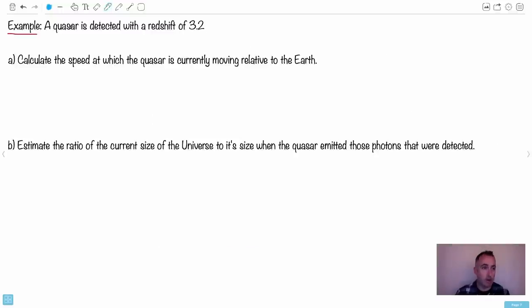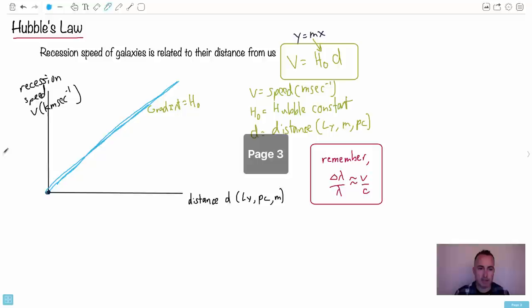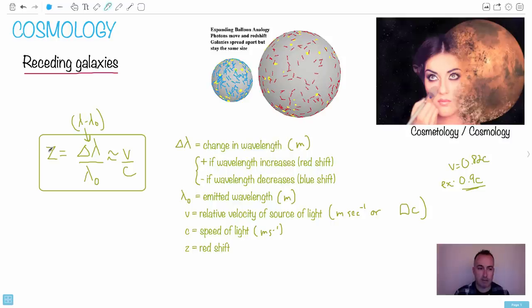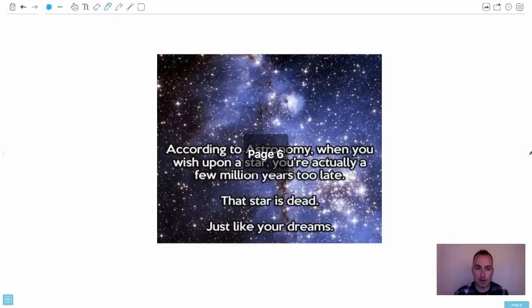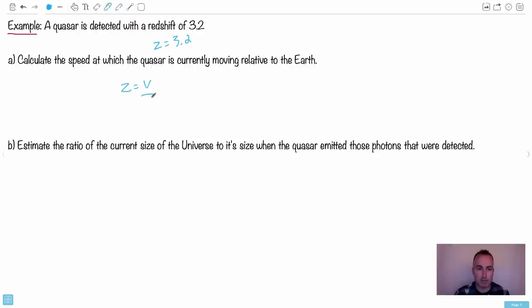So here's an example. We have a quasar. By the way, a quasar is a really distant light source. It's some of the brightest things we know of in the universe. So a quasar is detected with a redshift of 3.2. What is redshift again? Do you remember what letter that is? That's Z. So you know that Z is 3.2. The question is calculate the speed at which it's currently moving relative to the Earth. So find its speed. So we need an equation for Z. Do you remember some? Let's see here. If we go back, we have something for Z. We have this one right here. Z is just equal to V over C. It's actually that easy. See that? So we just have that. So let's go back here and say fine then.